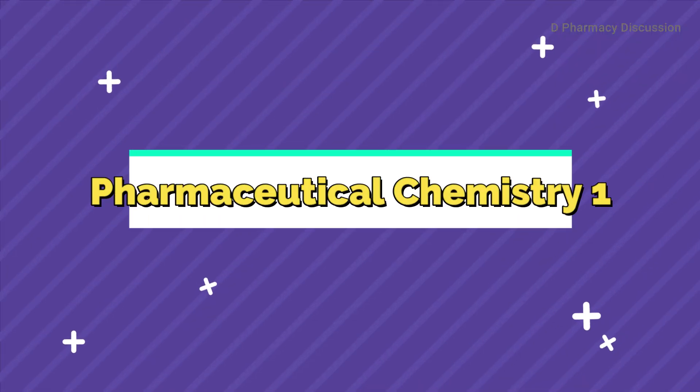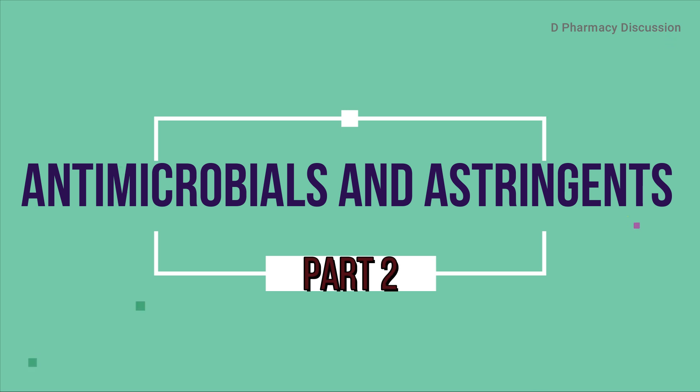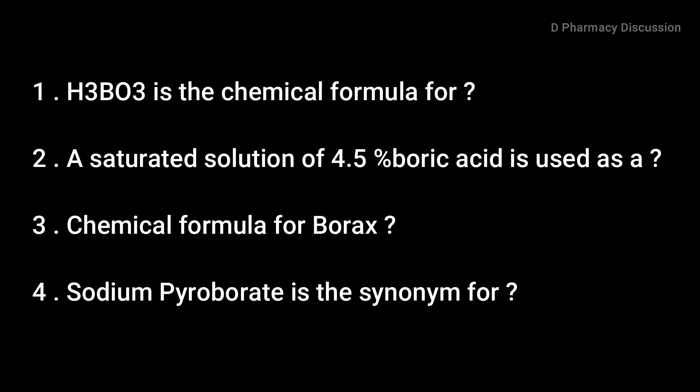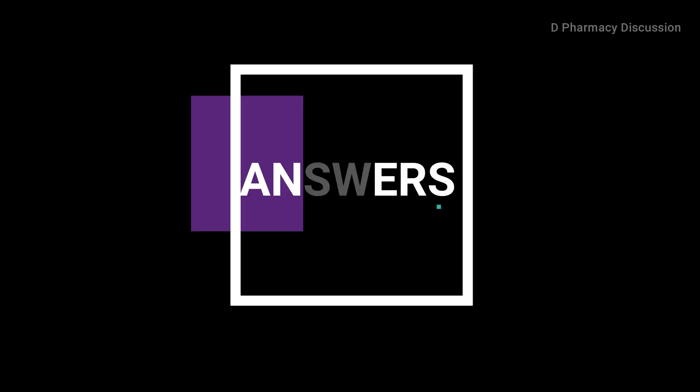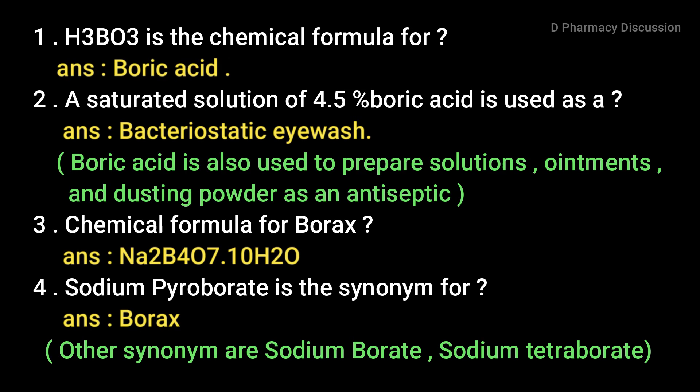This is a continuation from the last video — the link is in the description box, please go and check that out. Now let's check out the answers. First question: H3BO3 is the chemical formula for boric acid. Second question: a saturated solution of 4.5% boric acid is used as a bacteriostatic eye wash.